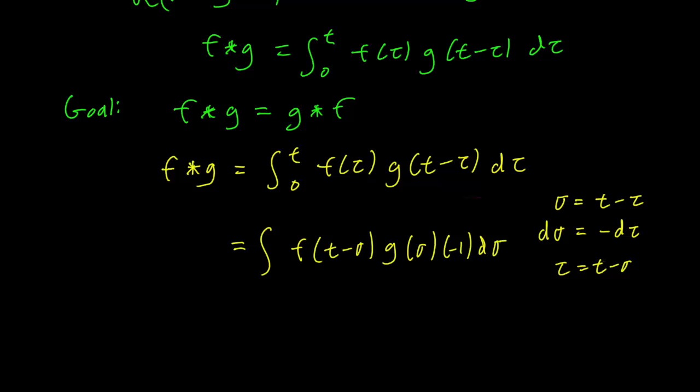So let's figure out what the limits of integration should be. The limits of integration in the original integral were tau from 0 to little t. When tau is 0, sigma is t, and when tau is t, sigma is 0.